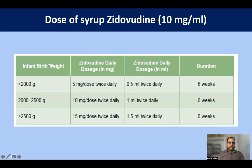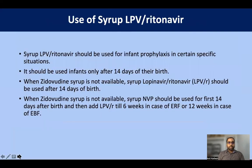Zidovudine is dosed twice daily — remember 'Z looks like 2, so twice daily' while nevirapine is once daily. Zidovudine dosing: less than 2 kg — 5 mg/dose twice daily; 2 to 2.5 kg — 10 mg twice daily; more than 2.5 kg — 15 mg twice daily. The syrup concentration for both nevirapine and zidovudine is 10 mg/mL. Syrup lopinavir/ritonavir should only be used after 14 days of life; if zidovudine is unavailable, give nevirapine for the first 14 days then switch to lopinavir/ritonavir.